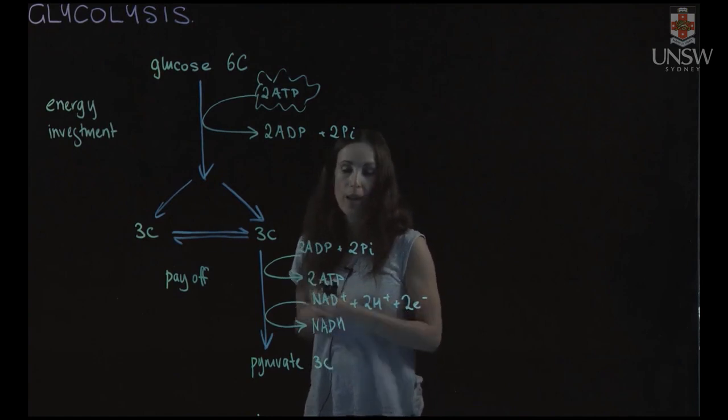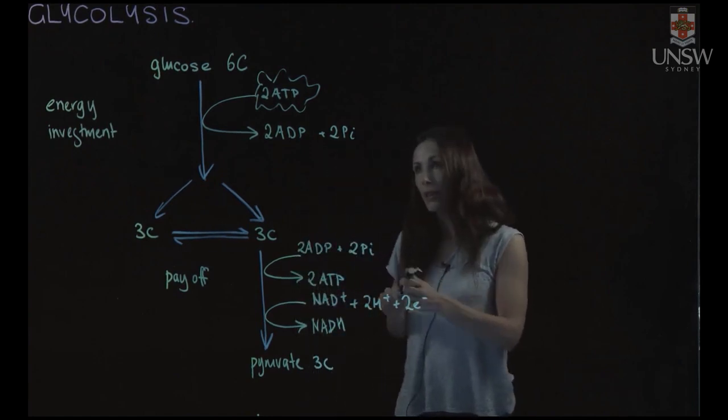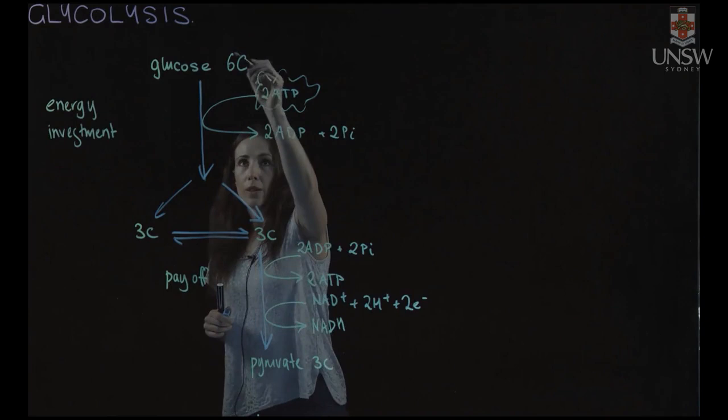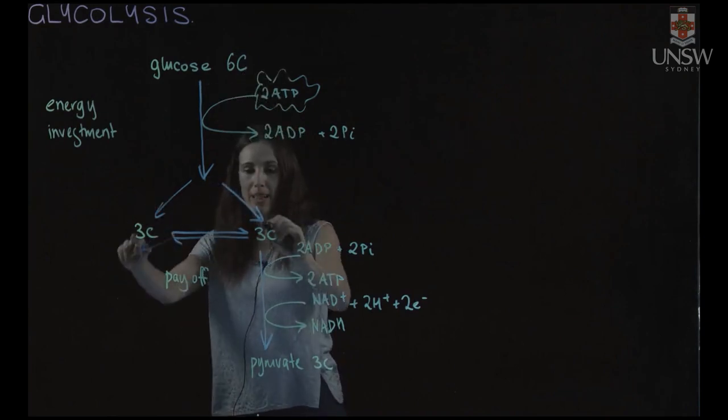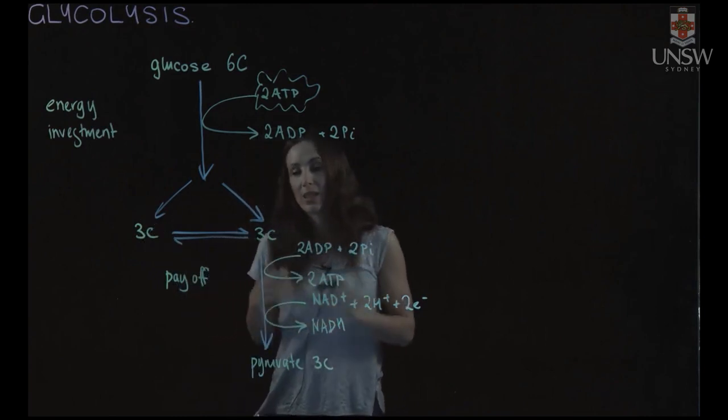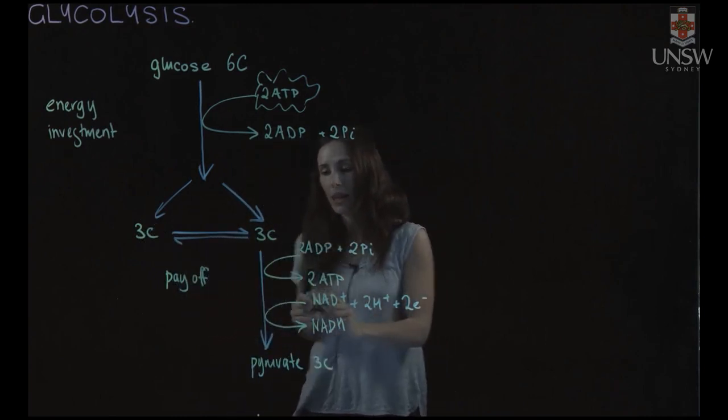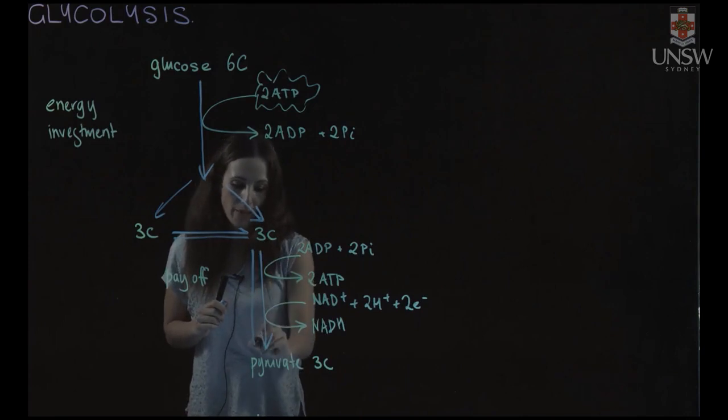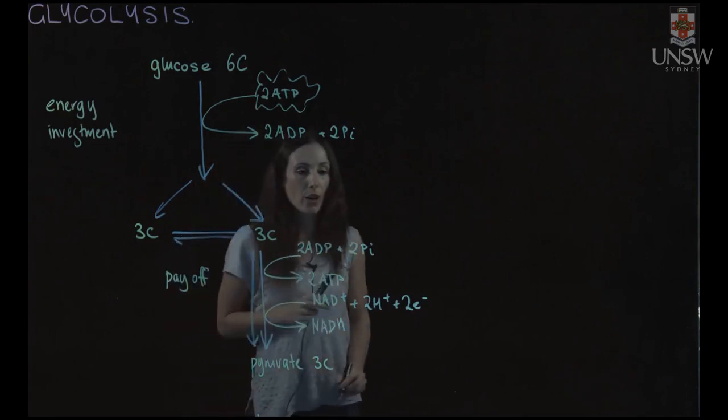And we're also getting two ATP being produced. If you look here from our six carbons we split into two three carbon molecules. One of them comes across here. So it's changed back into this isomer. And then this part of the reaction, the payoff phase, occurs twice.